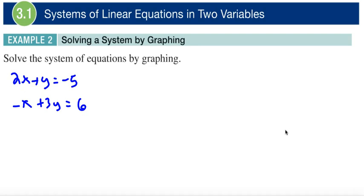We have a system of equations: 2x plus y equals negative 5, and negative x plus 3y equals 6. We want to solve this by graphing.